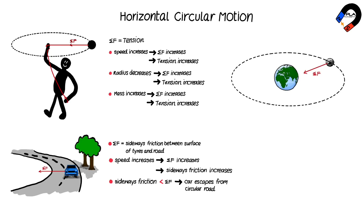The moon orbits the Earth in a circular path. The resultant force is provided by the gravitational force between the moon and the Earth. Further calculations in circular motion will be studied in inner-level physics.